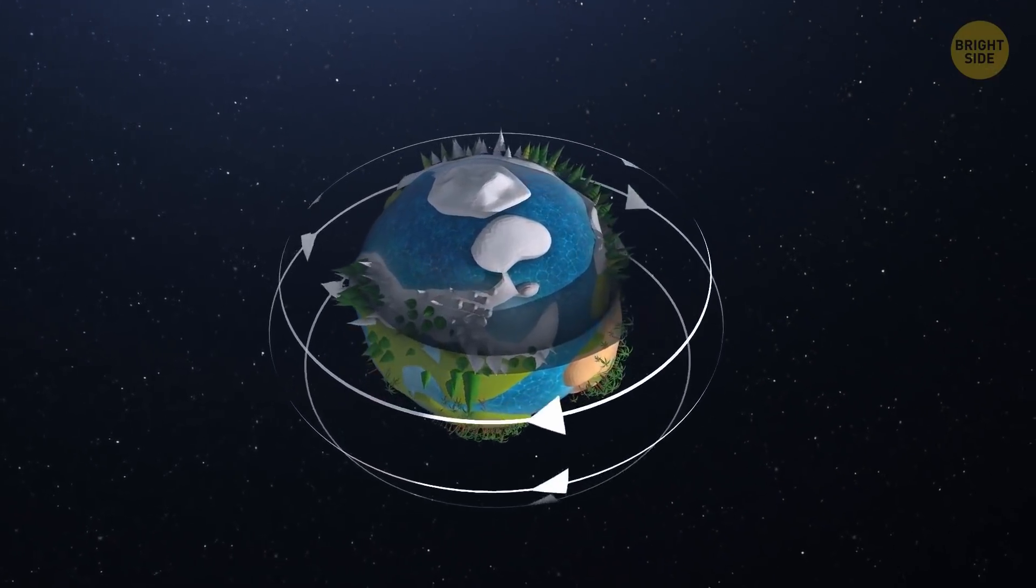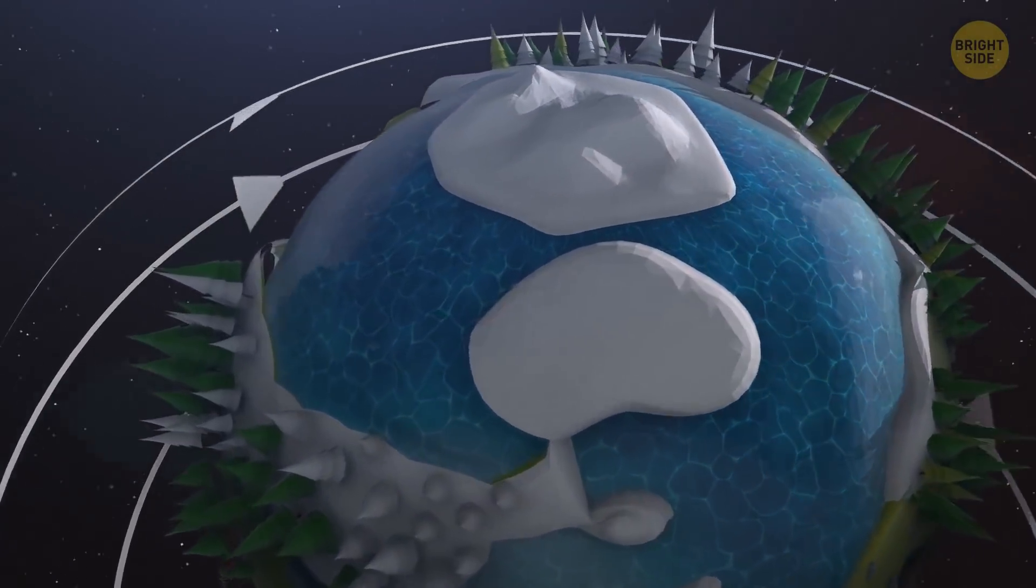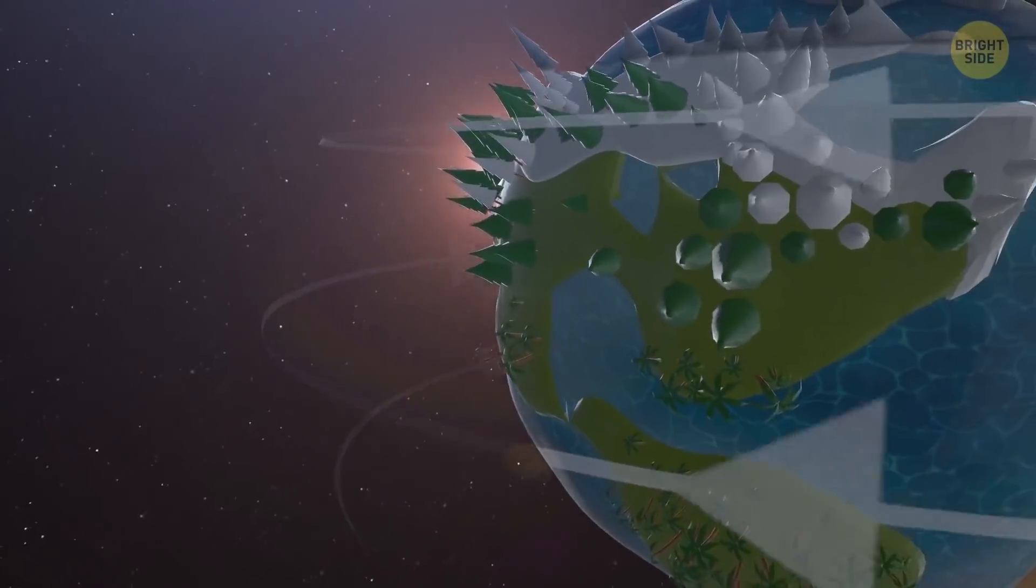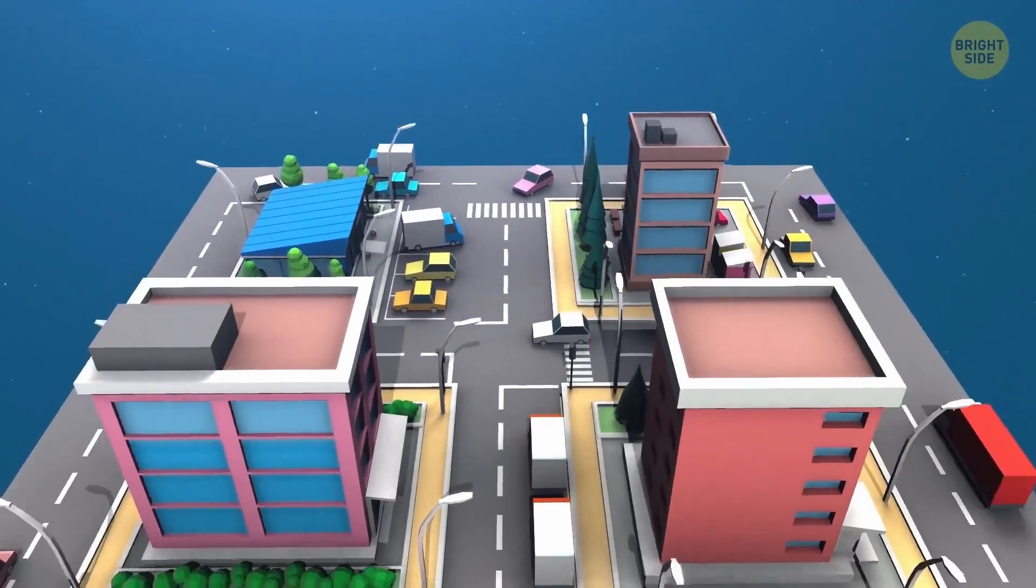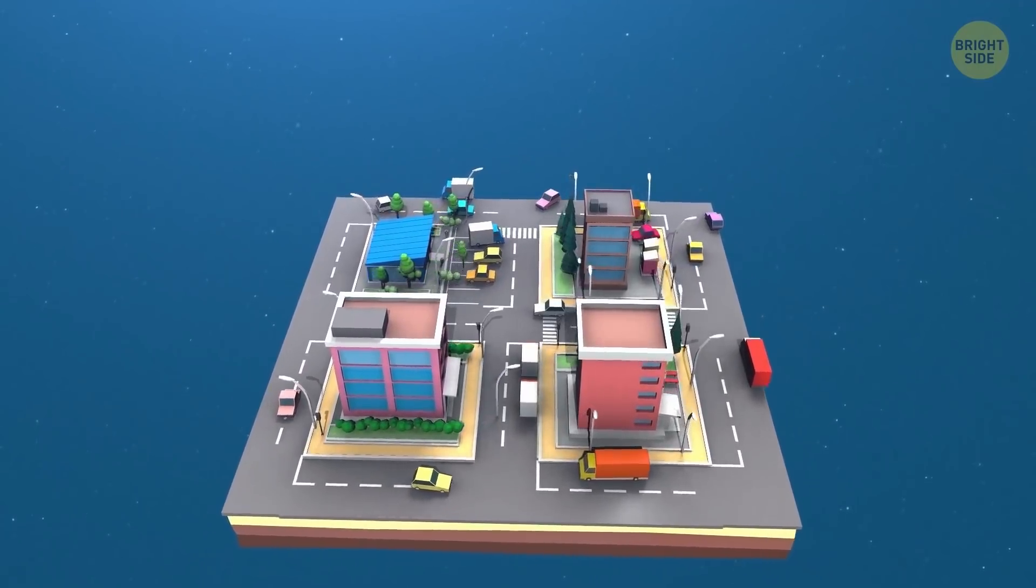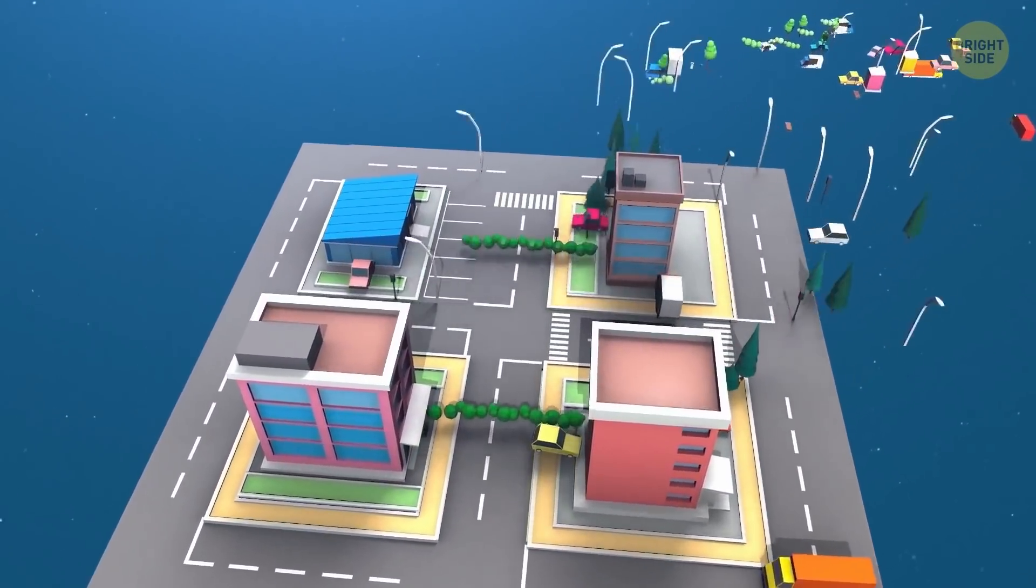So, in the case of an abrupt switch of the direction, an instant change in speed would make about 2,000 mph. Well, hold on to something. That means that everything not fixed to the ground would be hurled eastward.